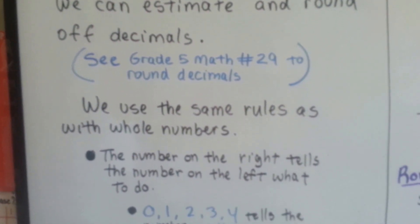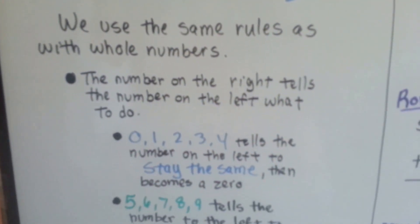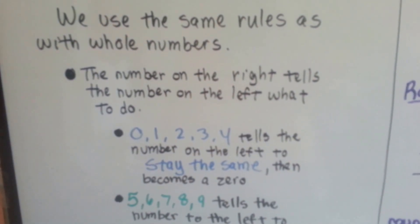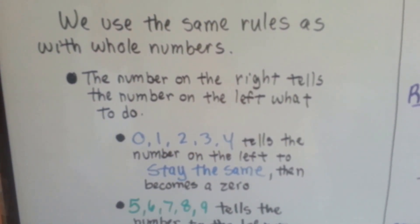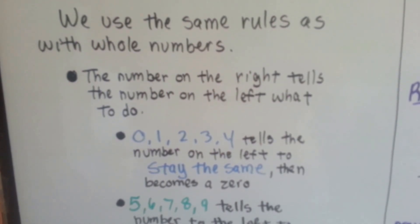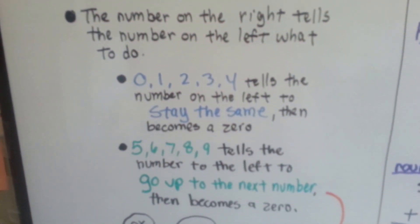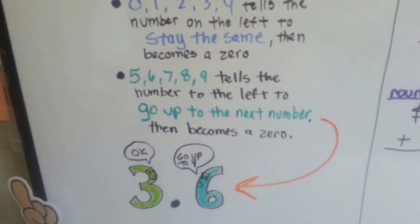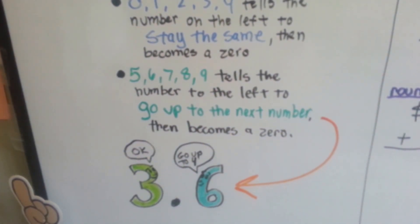We use the same rules as with whole numbers. The number on the right tells the number on the left what to do. If it's a 0, 1, 2, 3, or 4, it tells the number on the left to stay the same, and then it becomes a 0 when its job is done. If it's a 5, 6, 7, 8, or 9, it tells the number to go up to the next number, and then it becomes a 0.